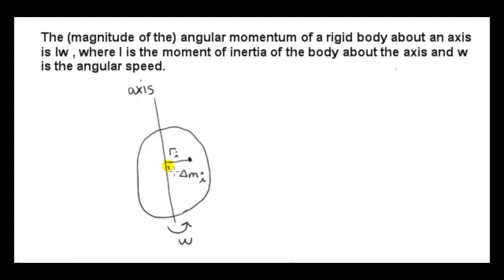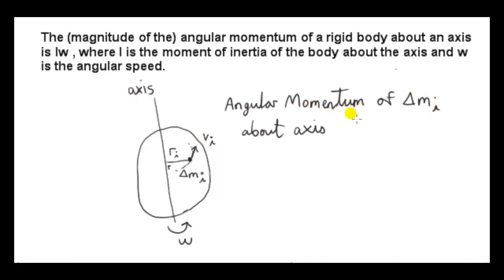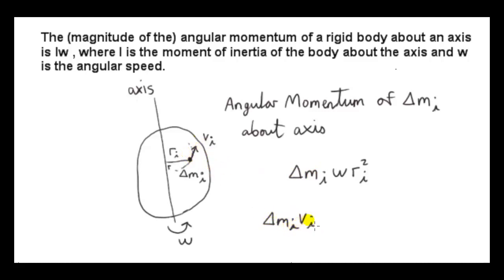So i is a subscript that runs from 1 up to however many particles make up the body — it could be billions or trillions. We try to make delta m_i as small as possible. The distance r_i is the perpendicular distance of the particle to the axis of rotation. The particle is moving with circular motion and has some speed v_i. We know how to get the angular momentum of this particle about the axis: we multiply the mass by omega by the distance squared. We take the momentum of this particle — delta m_i times v_i — then multiply by r_i, and since v_i equals omega times r_i, we get delta m_i times omega times r_i squared.